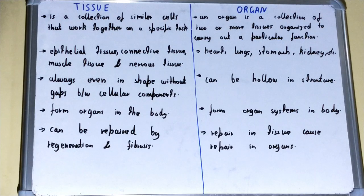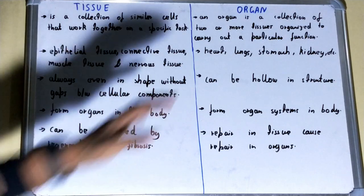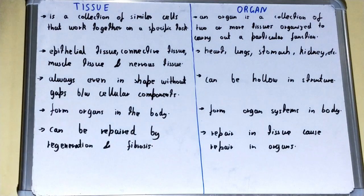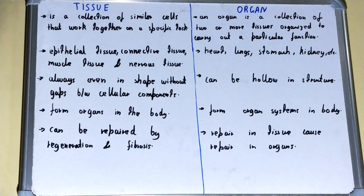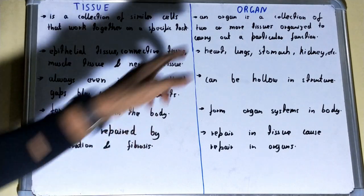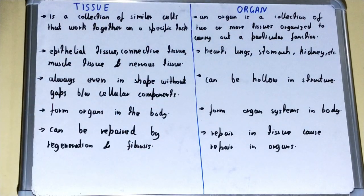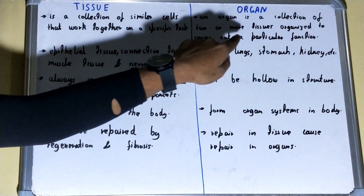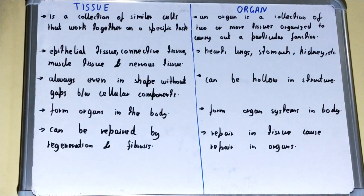But if we talk about the organ, an organ is a collection of two or more tissues organized to carry out a particular function. So in the case of an organ, two or more different kinds of tissue are organized together to carry out a particular function.